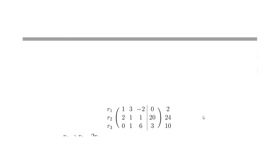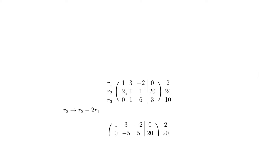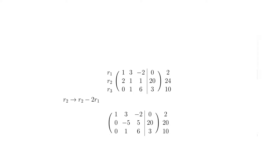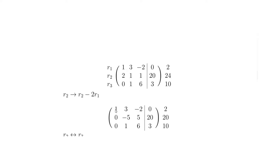Now let's do some row reduction, working column by column. In column one we've got a 1 in the top-left, which is great. We need to get the 2 below it to become a 0. To do that we subtract 2 times row 1 from row 2. So: 2 minus 2×1 = 0; 2 minus 2×3 = -5; 1 minus 2×(-2) = 5; and 20 minus 2×0 = 20.